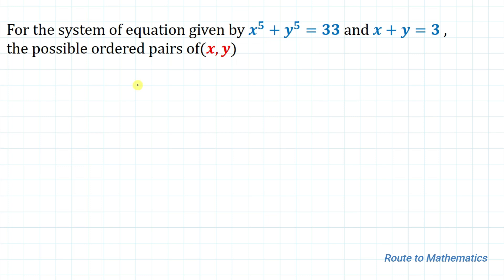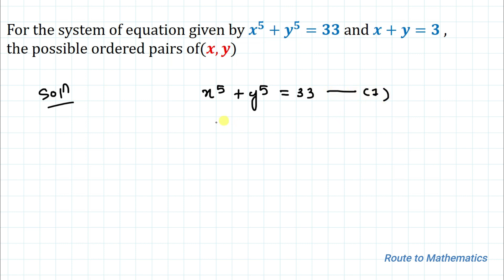Let's start the solution. Our first equation is x⁵ + y⁵ = 33, and our second equation is x + y = 3.